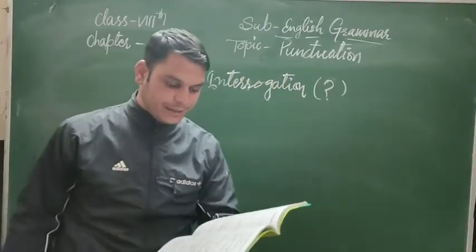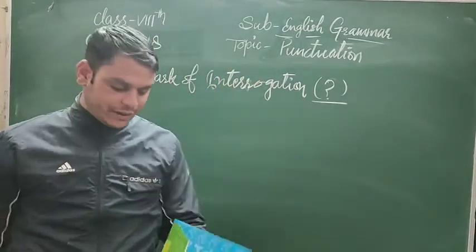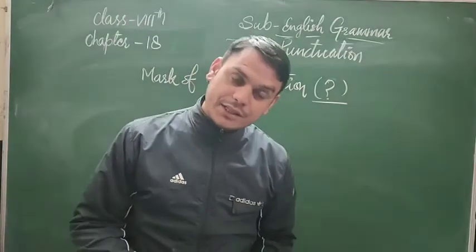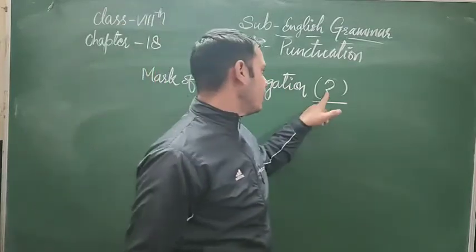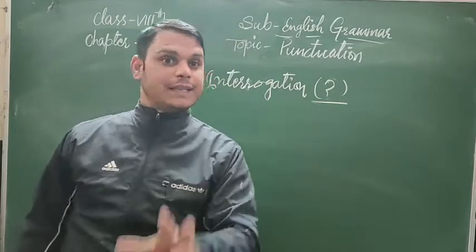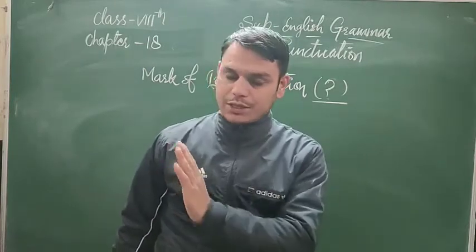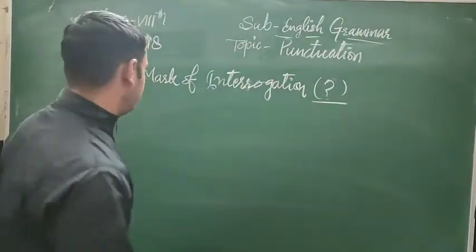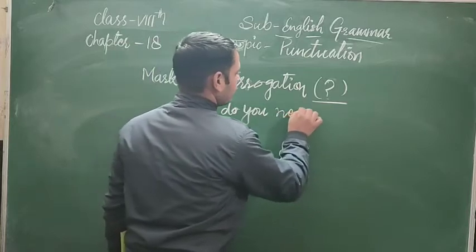Now we have the next punctuation mark: Mark of Interrogation — यानि जिसको आप question mark भी बोलते हैं। The mark of interrogation is used at the end of an interrogative sentence — यानि प्रश्नवाचक वाक्यों के last में। For example: 'What do you need?' — at the end you use the interrogation mark.